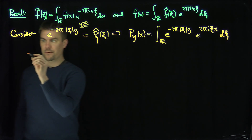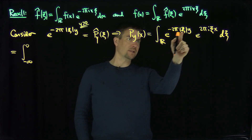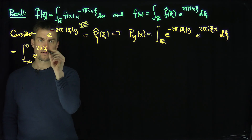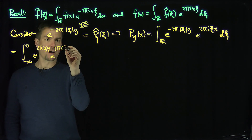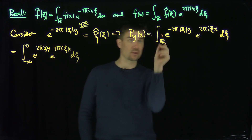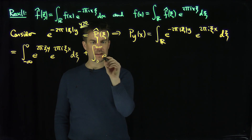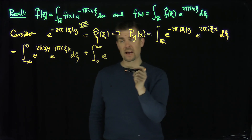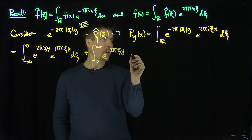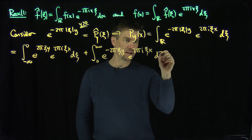The first integral is from negative infinity to zero. When ξ is negative, the absolute value outputs a negative, so the exponent becomes positive: e^{2πξy} e^{+2πiξx} dξ. Plus the integral from zero to infinity: when ξ is positive, the absolute value doesn't do anything, so we get e^{-2πξy} e^{2πiξx} dξ.